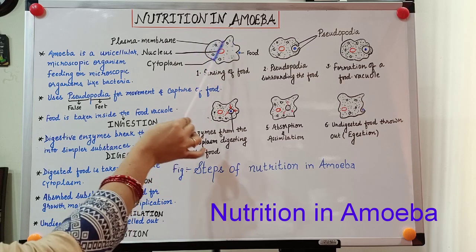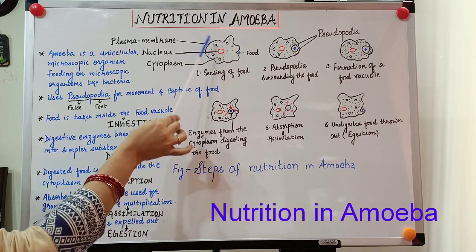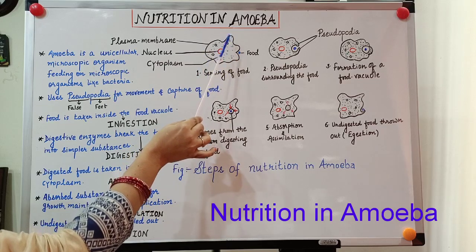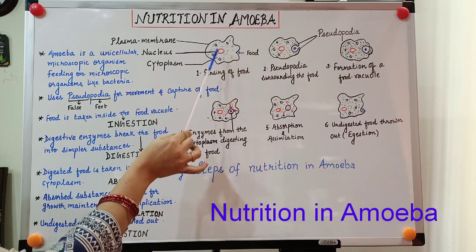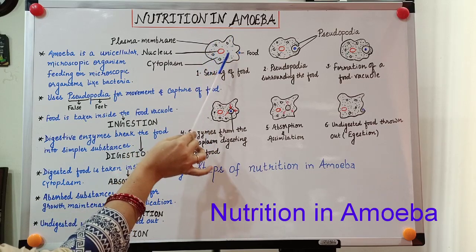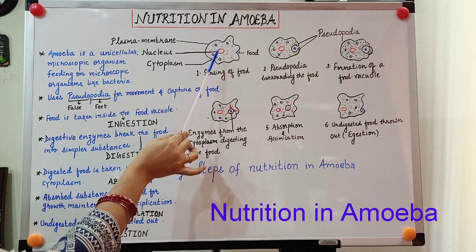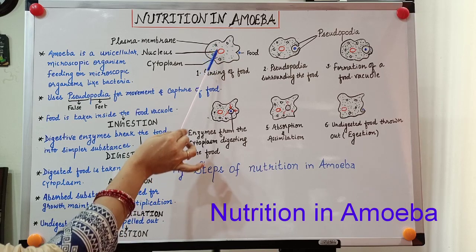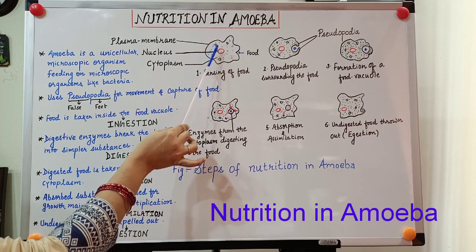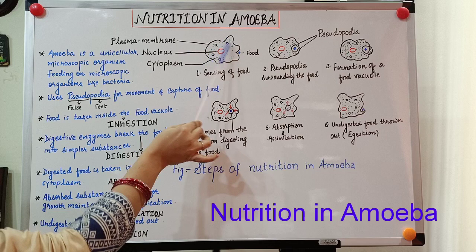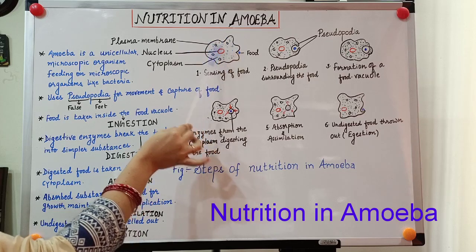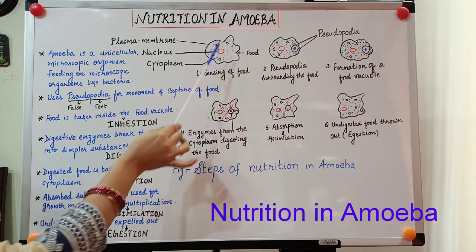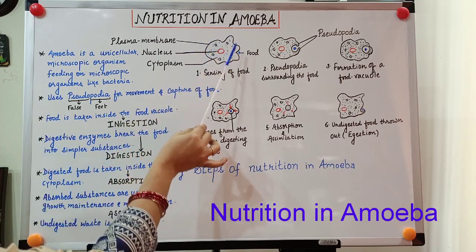If we see the structure of amoeba, it is surrounded by a plasma membrane inside which there is a jelly-like structure called cytoplasm. It also contains nucleus and cell organelles about which we will study later. It also has certain vacuoles.